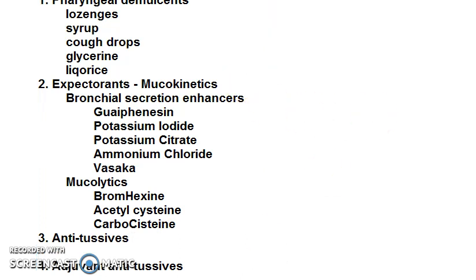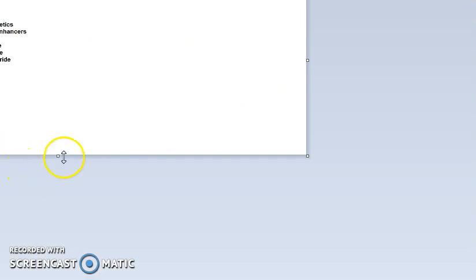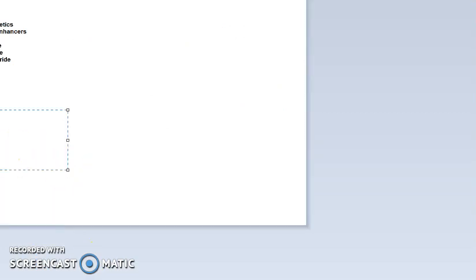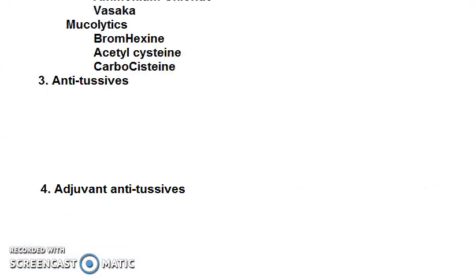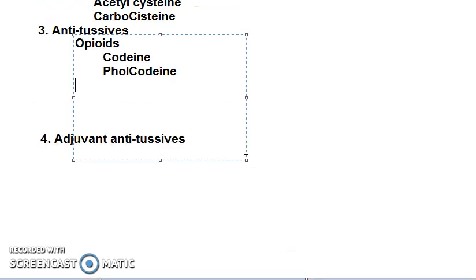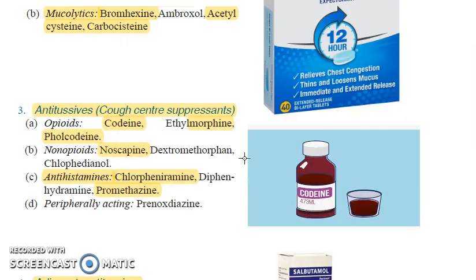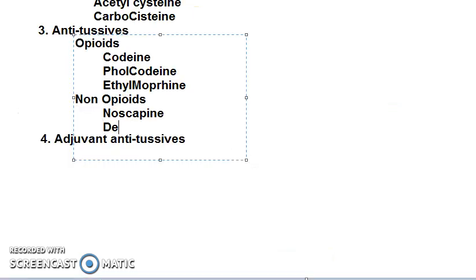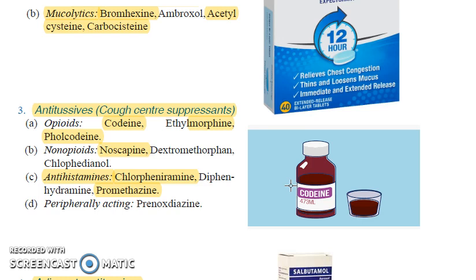Antitussives — cough center suppressants. Opioids: remember the spelling — codeine, folcodeine, ethylmorphine. Then non-opioids: noscapine and dextromethorphan. Know where dextromethorphan belongs — it is a non-opioid.